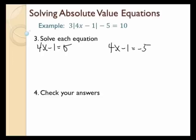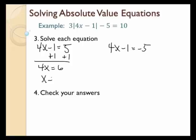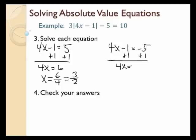For the first equation, 4x minus 1 equals 5: add 1 to both sides to get 4x equals 6, then divide by 4. So x equals 6 over 4, which reduces to 3 halves. For the second equation, 4x minus 1 equals negative 5: add 1 to both sides to get 4x equals negative 4, then divide by 4. So x equals negative 1.